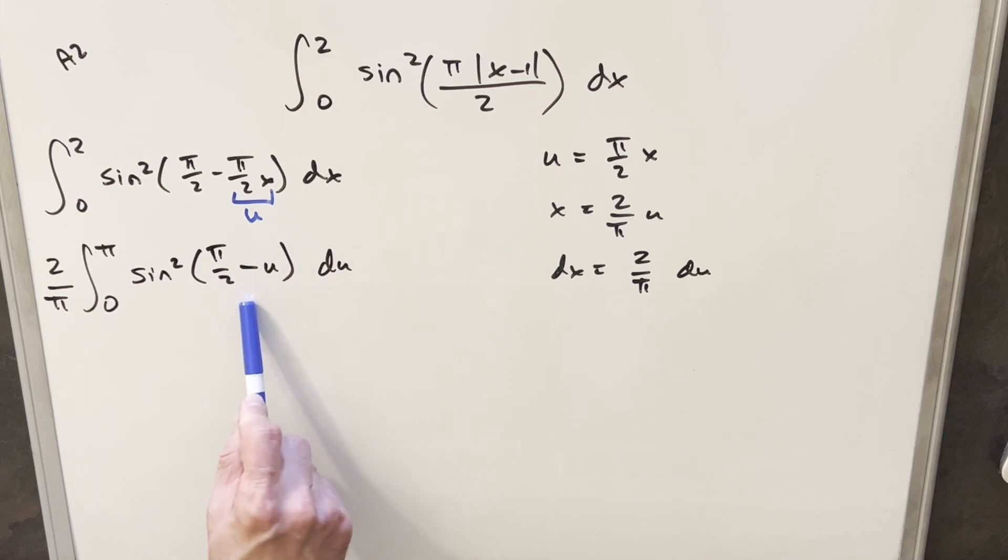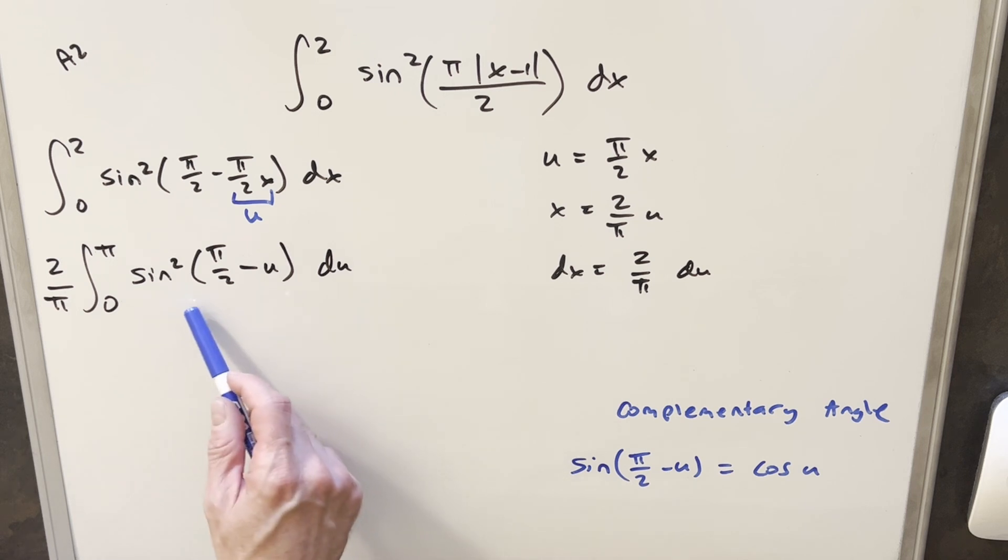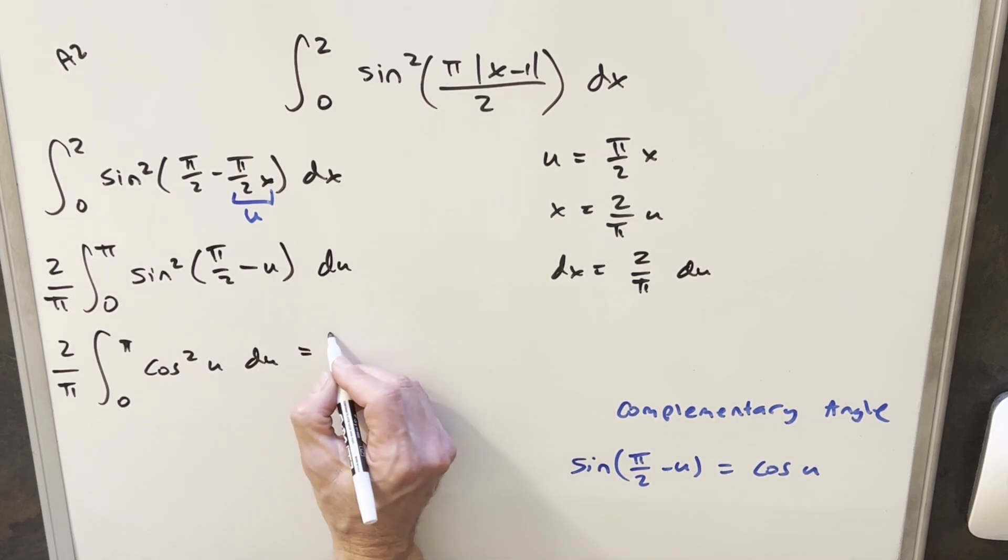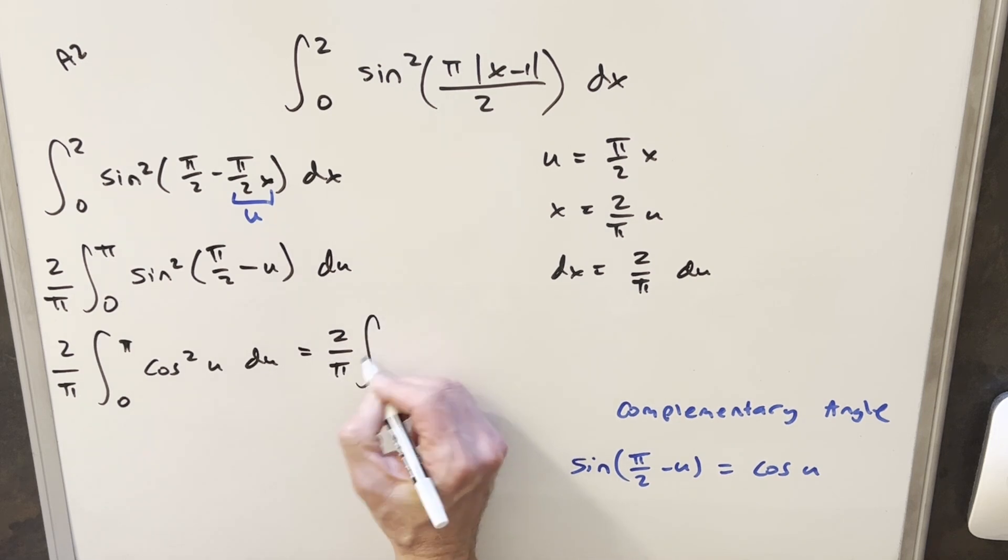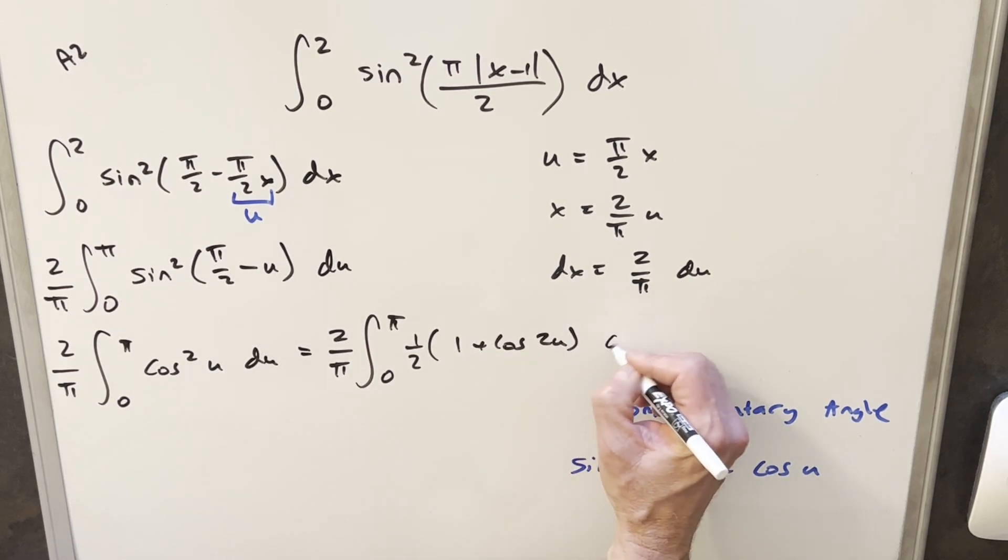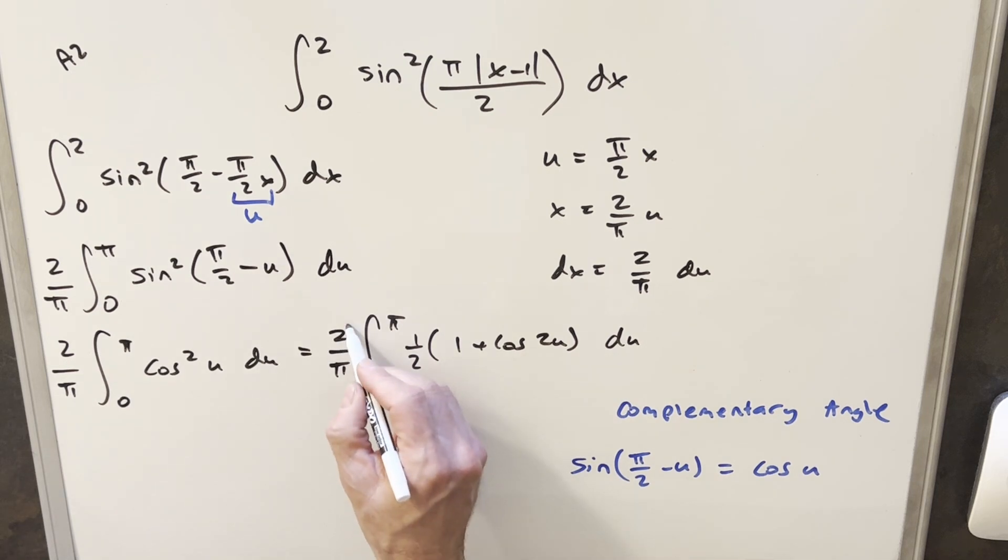But now, like I said earlier, this is going to allow me to use the complementary angle formula for sine. So we have this formula that tells us that sine pi over 2 minus u is going to give us cosine of u. So we'll have our 2 over pi here, and doing this, we end up with cosine squared u du. But then for this, we'll just use our power reduction formula. I'm going to write this as 1 half 1 plus cosine 2u du. But then these 2s are going to cancel here. And we're set up to integrate this thing.